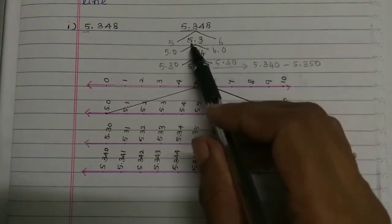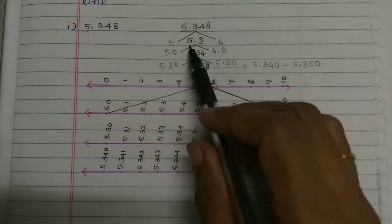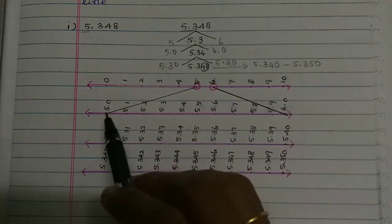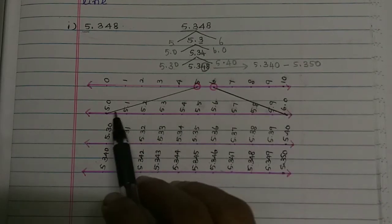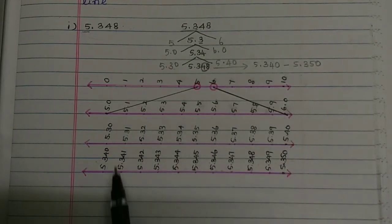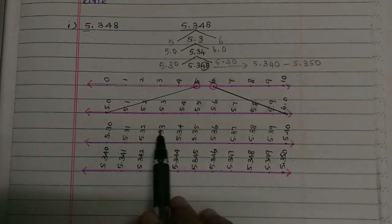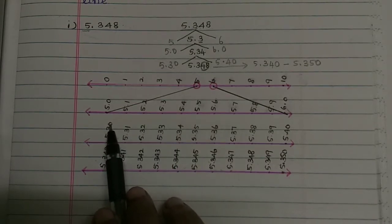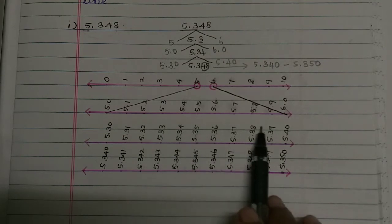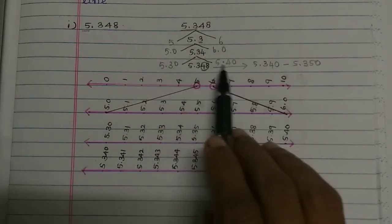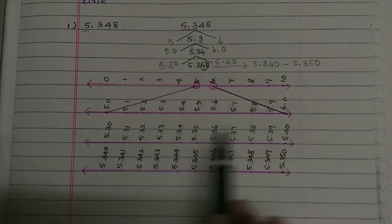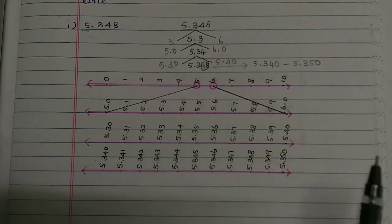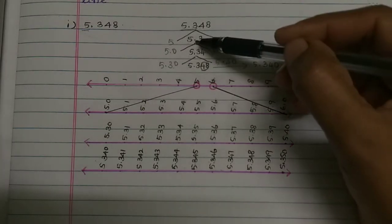The second number is 5.3. So 5.3 is between 5.0 and 6.0. We can increase the number from 5.0 in the corner. We can touch the main number. We can increase the number in the corner. You can increase from 5.30 and the last number is 5.40.